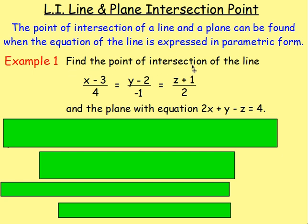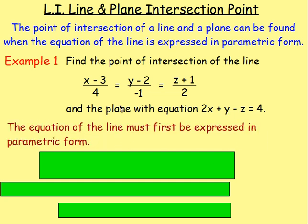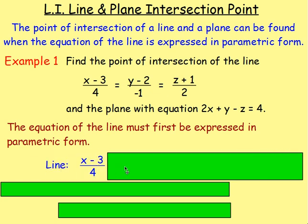Example 1: Find the point of intersection of the line (x-3)/4 = (y-2)/(-1) = (z+1)/2 and the plane with the equation 2x + y - z = 4. As it says up here, the way we find that point of intersection is by expressing the equation of the line in parametric form.